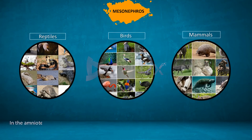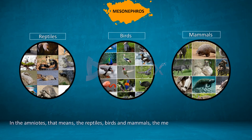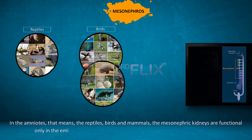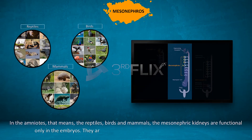In the amniotes — that is, the reptiles, birds, and mammals — the mesonephric kidneys are functional only in the embryos. They are replaced by the metanephric kidneys in the adults.